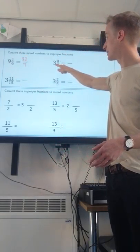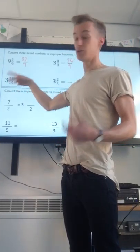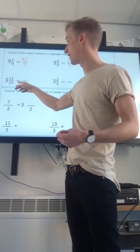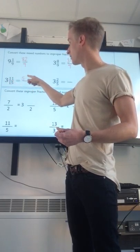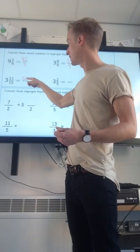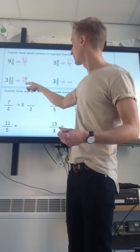So 3 times 9 is 27, add 8, makes 34 ninths. You can see the denominators always stay the same. 3 times 15, which I could have done short multiplication, but I know it's 45. 45 add 11 makes 56. There we go, 56 fifteenths.